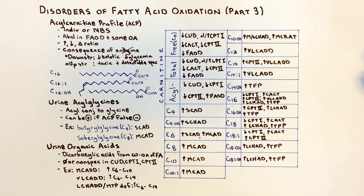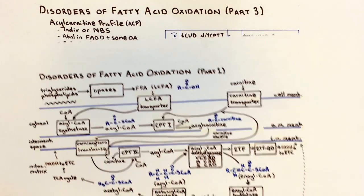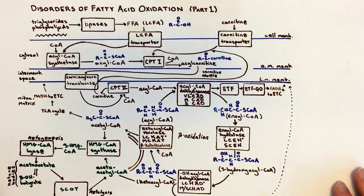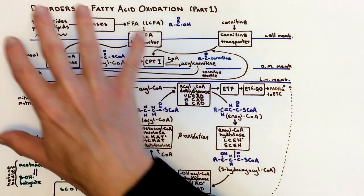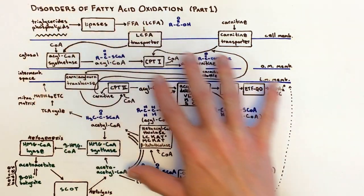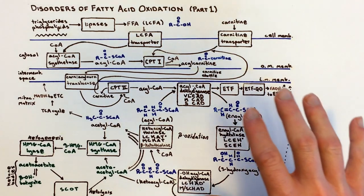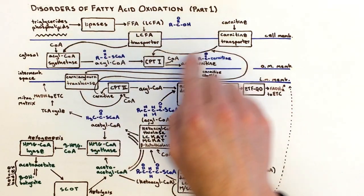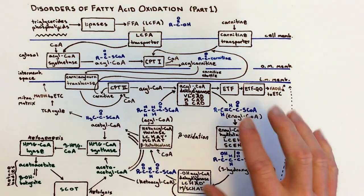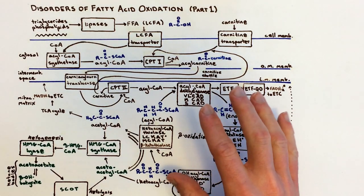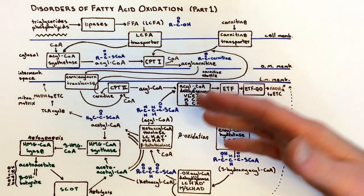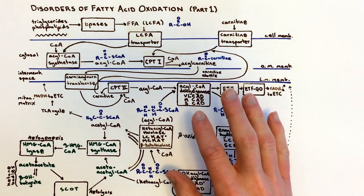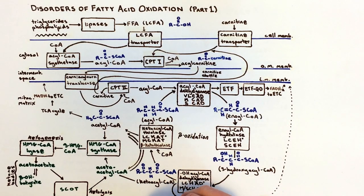Now let's jump in. We're going to start going through the chart from Lecture 1 — the pathway of fatty acid oxidation — starting with the enzymes at the top and working our way down, looking at which species build up or are deficient in the various enzyme defects in order to fill out our chart.